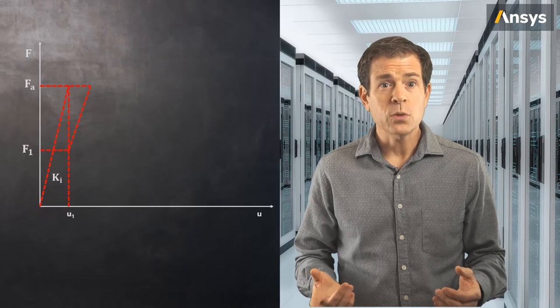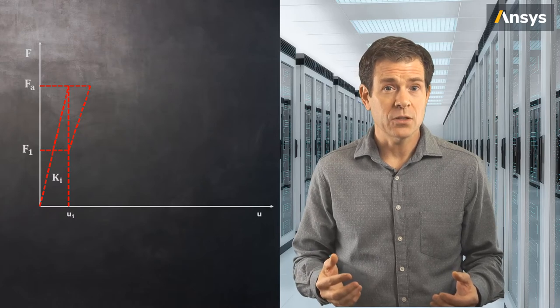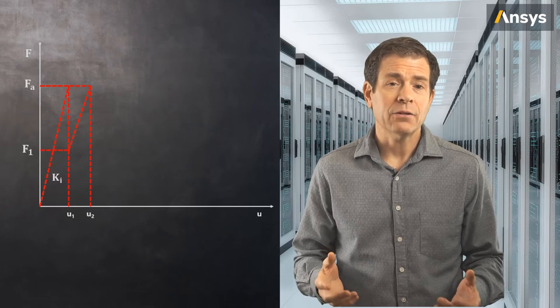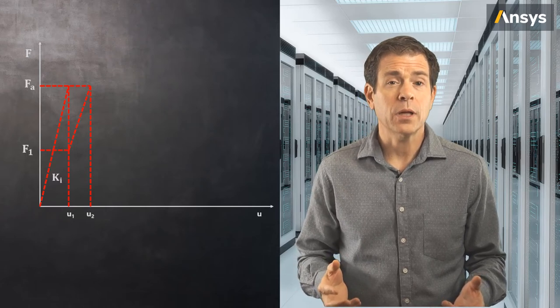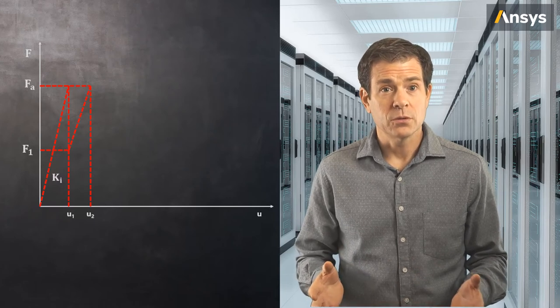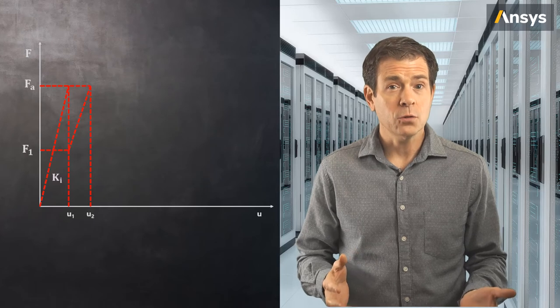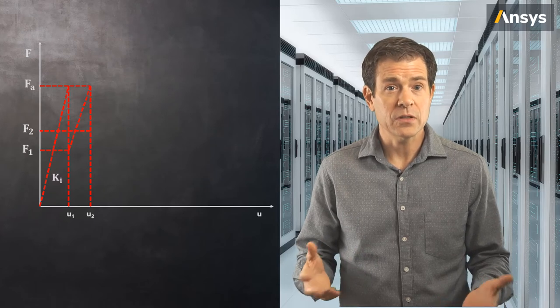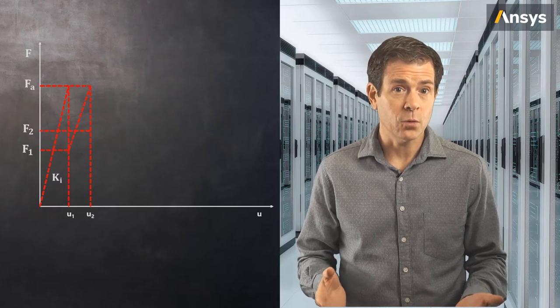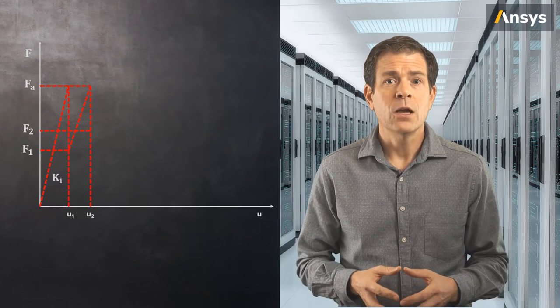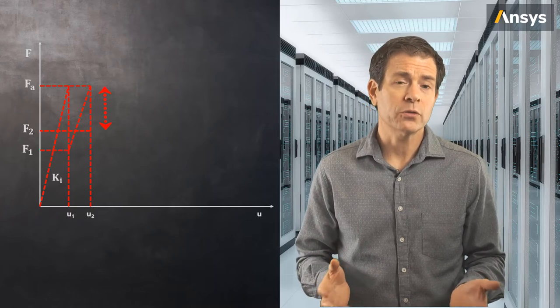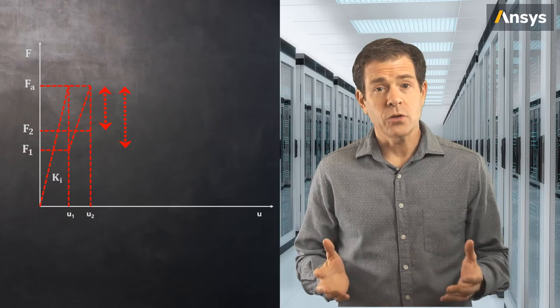Now in the next iteration we start from this displacement stage, recalculate the estimate of the stiffness of the system, and once again calculate the final displacement for the applied force F sub a. The displacement is u sub 2, and once again we calculate the internal forces developed in the elements due to this displacement and compare their sum against the applied force. Notice that while there is still some difference between the two, this difference is smaller than earlier. This is called the second iteration.